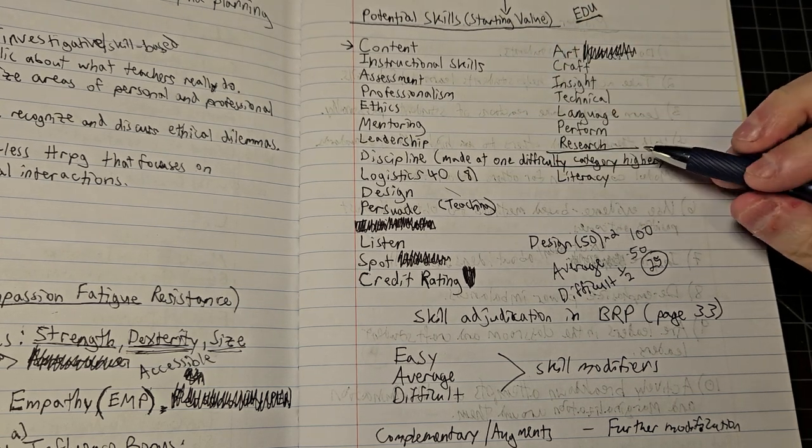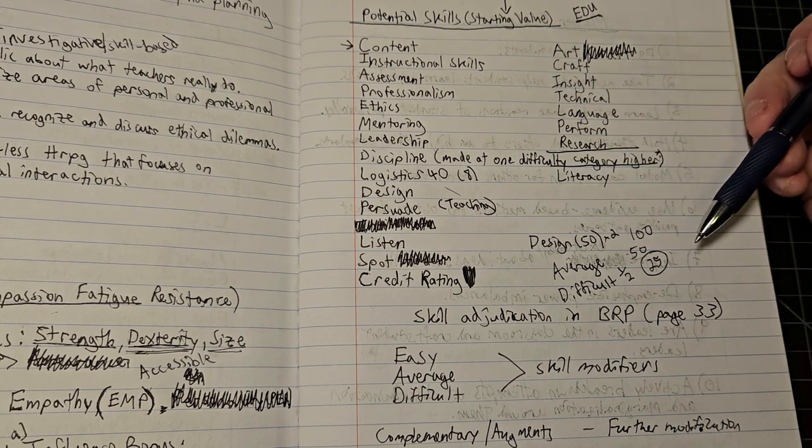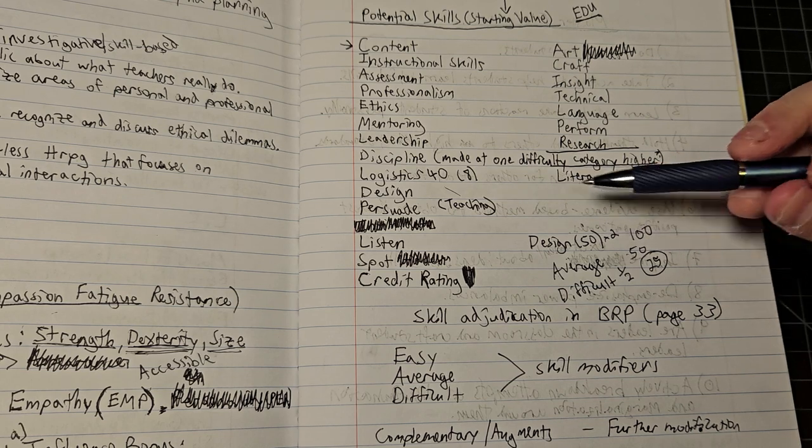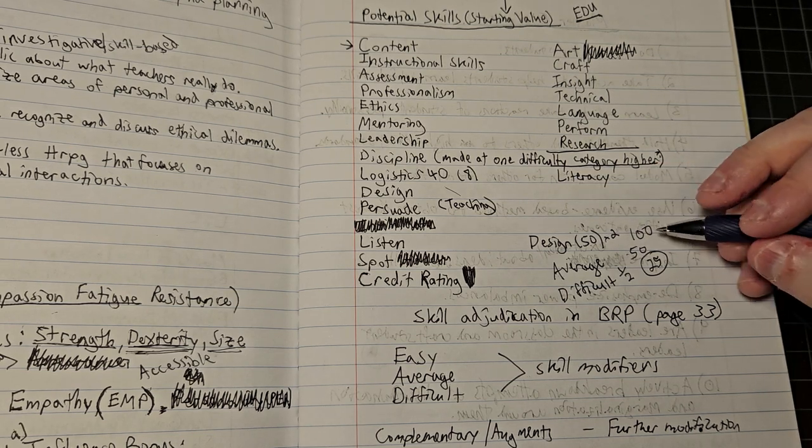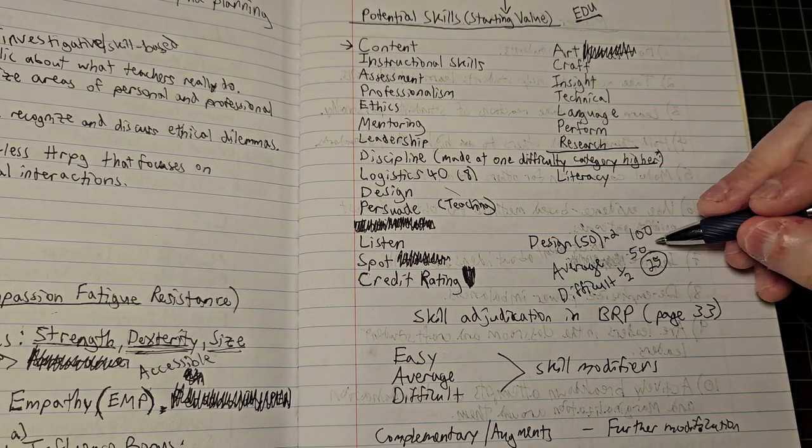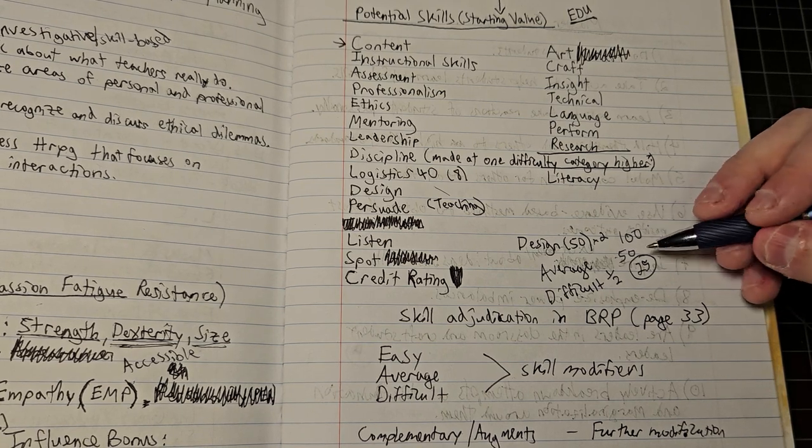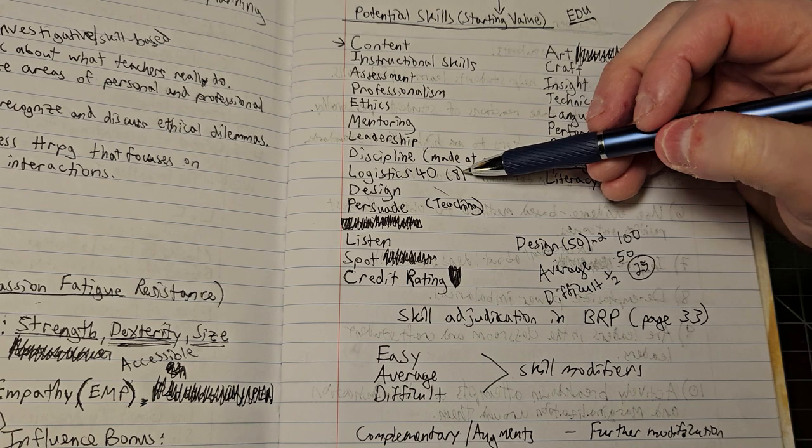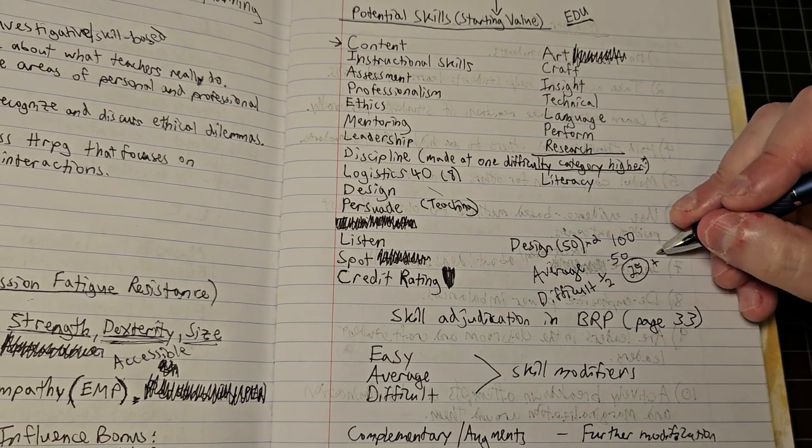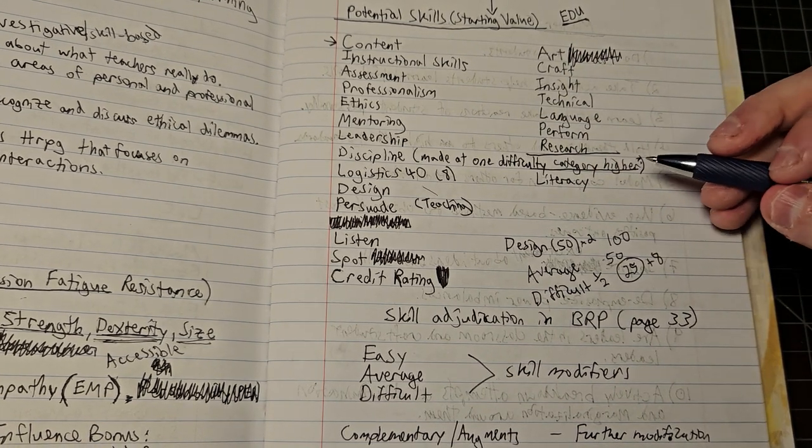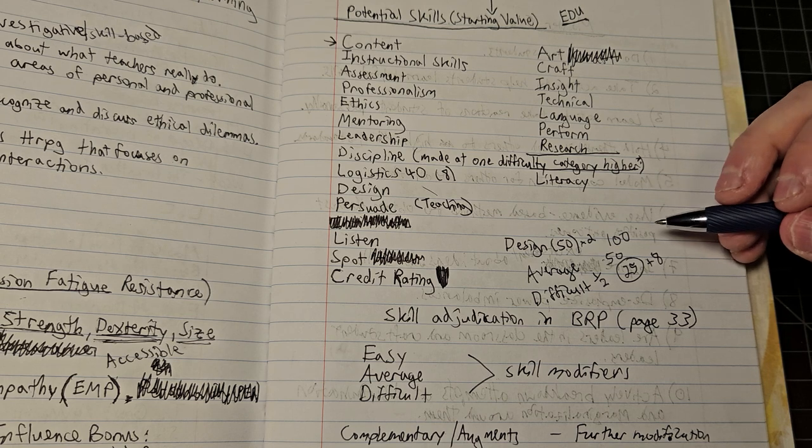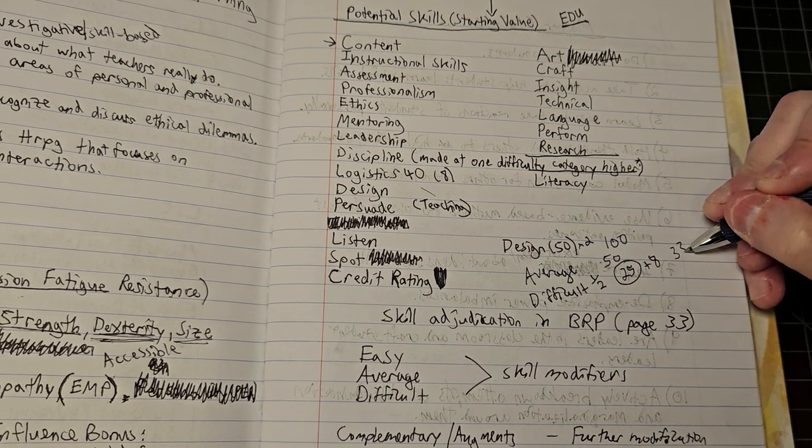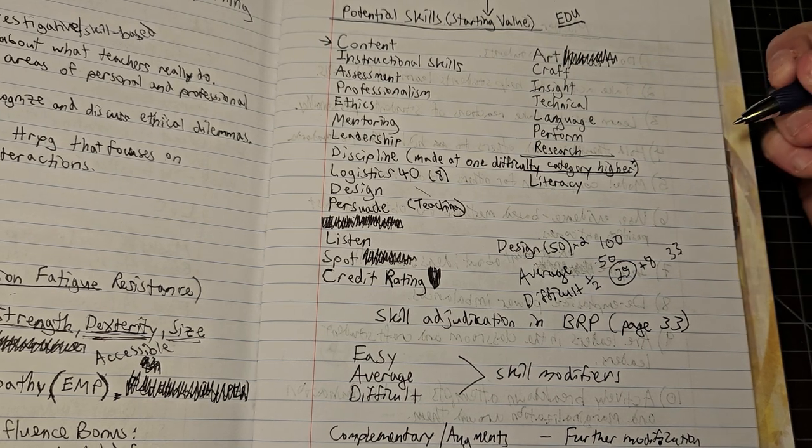What you would do in the case of BRP is you would subtract it from your skill roll, or in these circumstances you would add it to the difficulty that needs to be beaten. So if it were a difficult task but I use my logistics as complementary skill, instead of needing to hit 25, I would need instead to roll 33 or under. In other words, having a complementary skill benefits me under these circumstances.